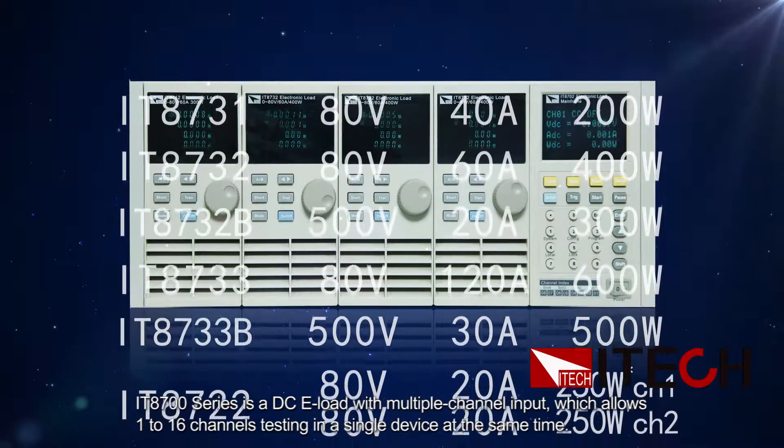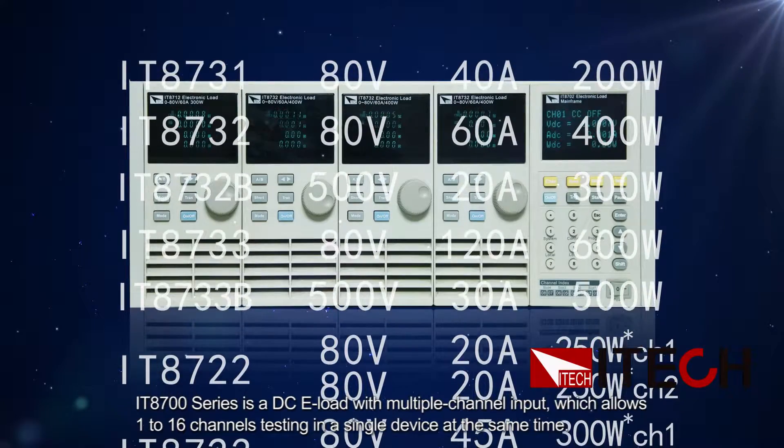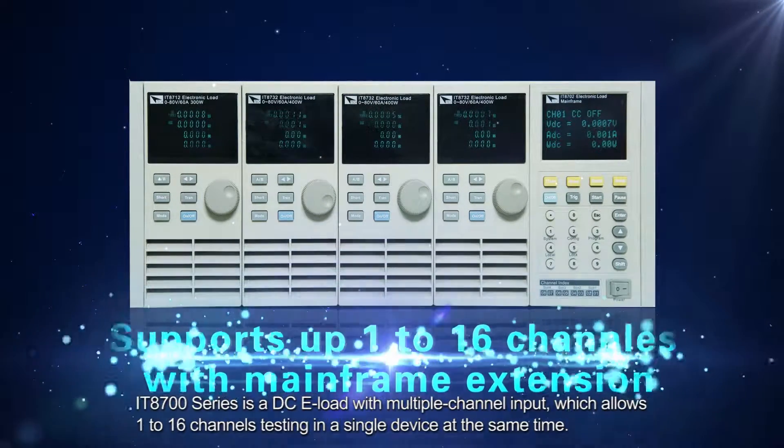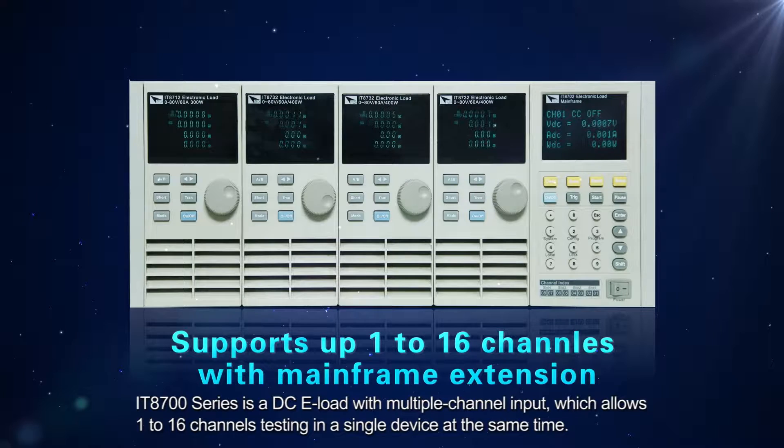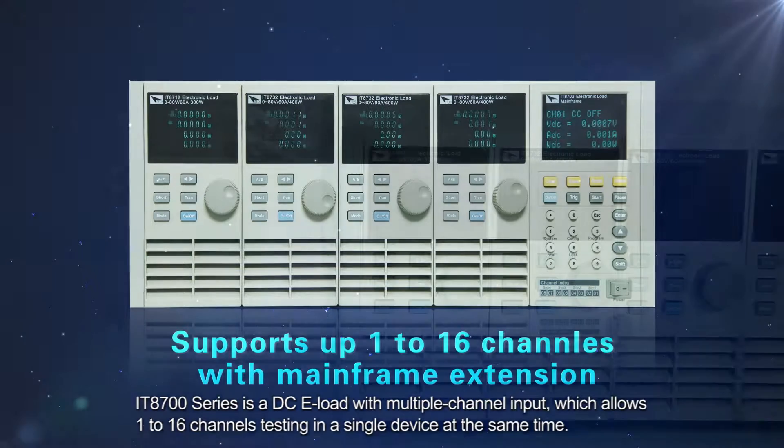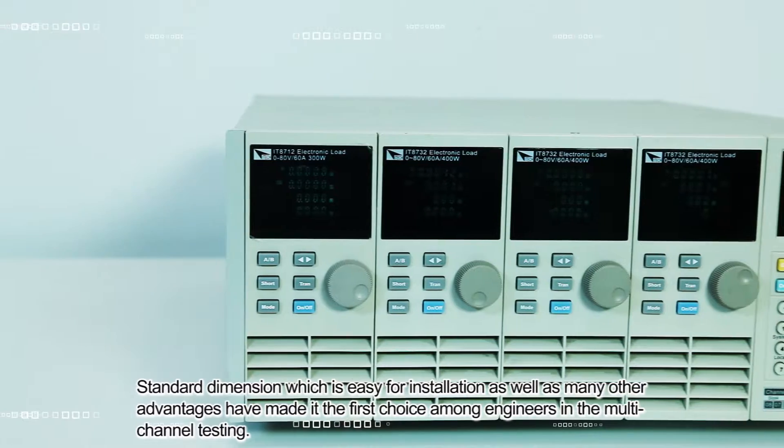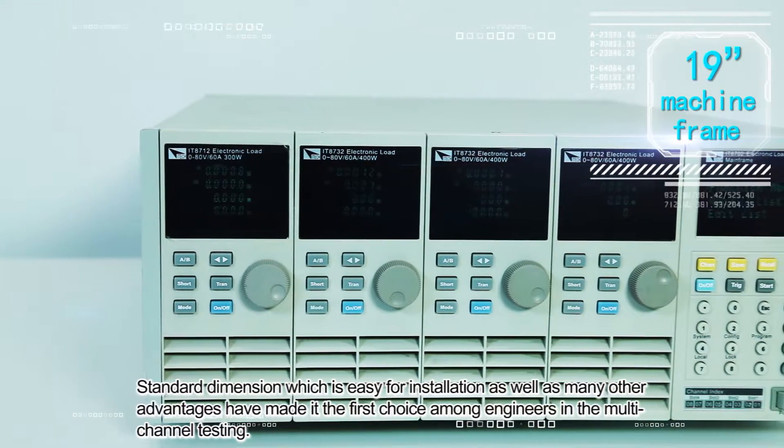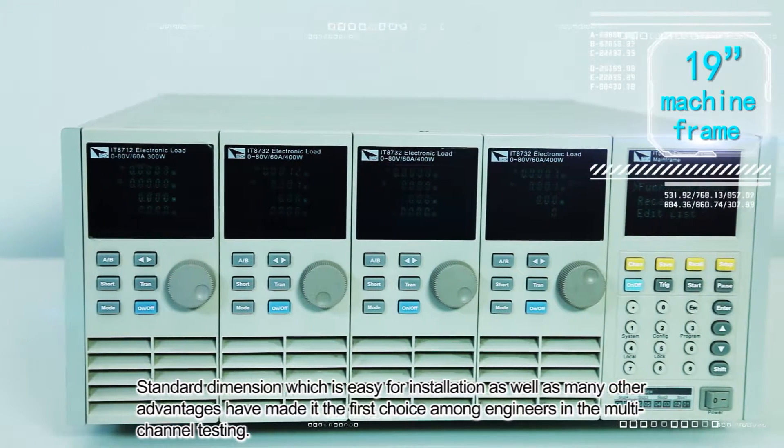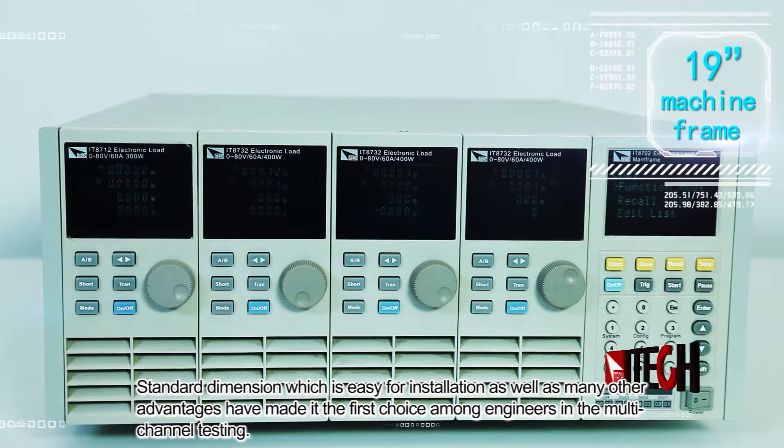The IT8700 series is a DC ELO with multiple channel input, allowing one to sixteen channels testing in a single device simultaneously. Standard dimensions which are easy for installation, as well as many other advantages, have made it the first choice among engineers in multi-channel testing.